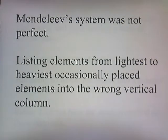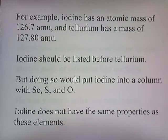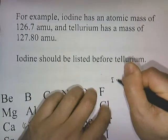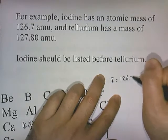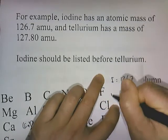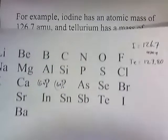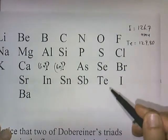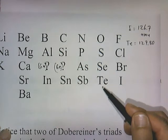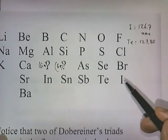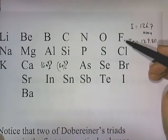Mendeleev's system was not perfect. Listing elements from lightest to heaviest occasionally placed elements in the wrong vertical column. For example, iodine has an atomic mass of 126.7 amu and tellurium has an atomic mass of 127 amu, making iodine lighter. So by atomic mass, iodine should be listed before tellurium — but if placed that way, iodine's properties would not match those of oxygen, sulfur, and selenium, and tellurium's properties would not match those of fluorine, chlorine, and bromine.